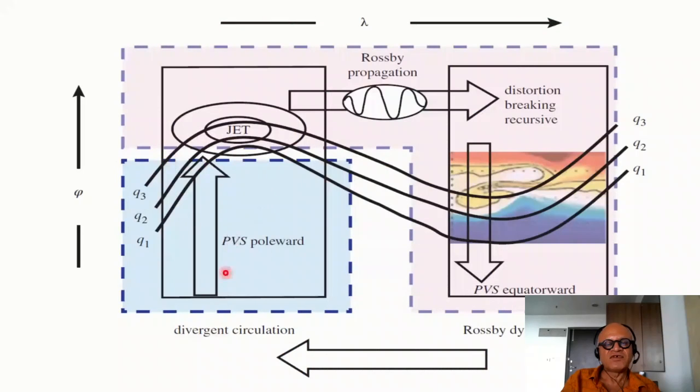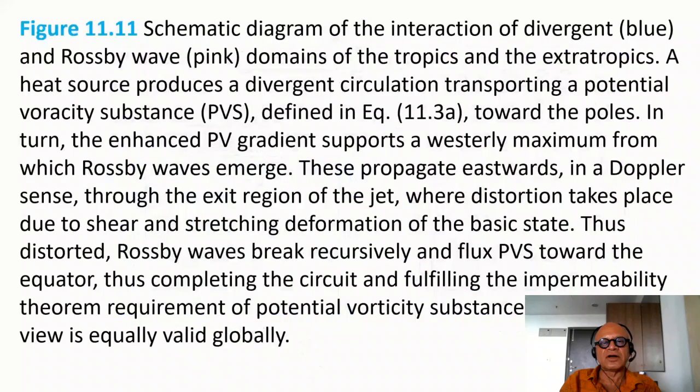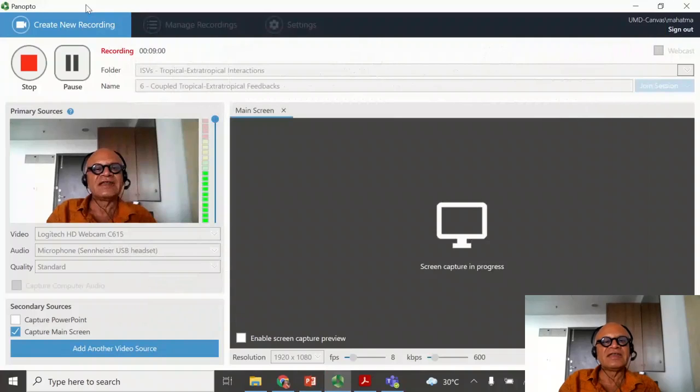So essentially you have divergent circulation being produced in the tropics and working through the jet and sending potential vorticity substance poleward. So in the longitudinal direction, let's say you are here on the African longitude and here you are in the northeastern Pacific. So you have distortion and breaking and recursive production of PV flux that is going to then come in towards the tropics equatorward through this westerly duct and the tropical upper tropospheric trough. So basically you have Rossby wave dynamics related to the divergent circulation related to the convection and diabatic heating and the communication back and forth between the tropics and extratropics. So this is the key idea behind the tropical extratropical interactions and feedbacks at intraseasonal time scale.